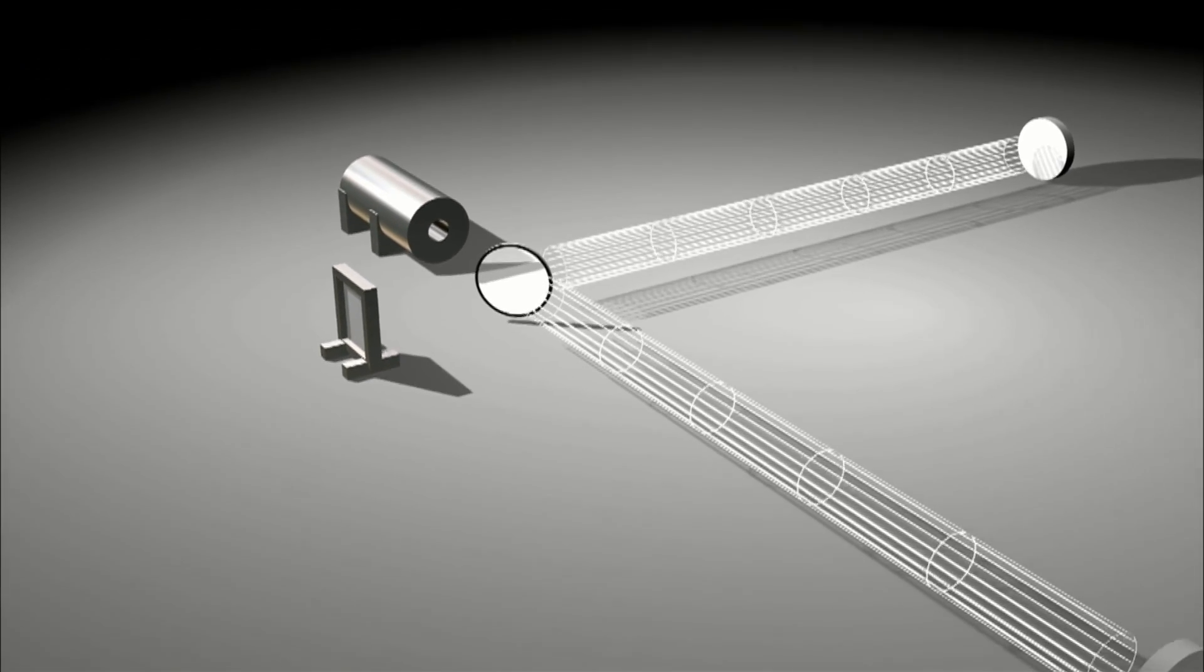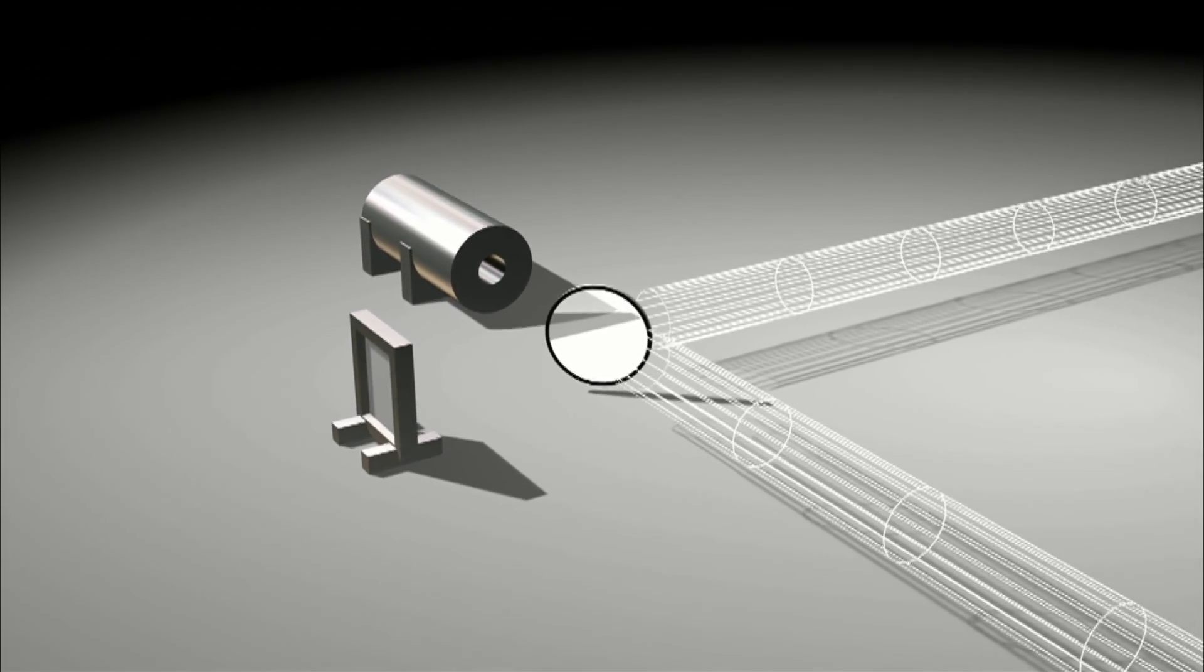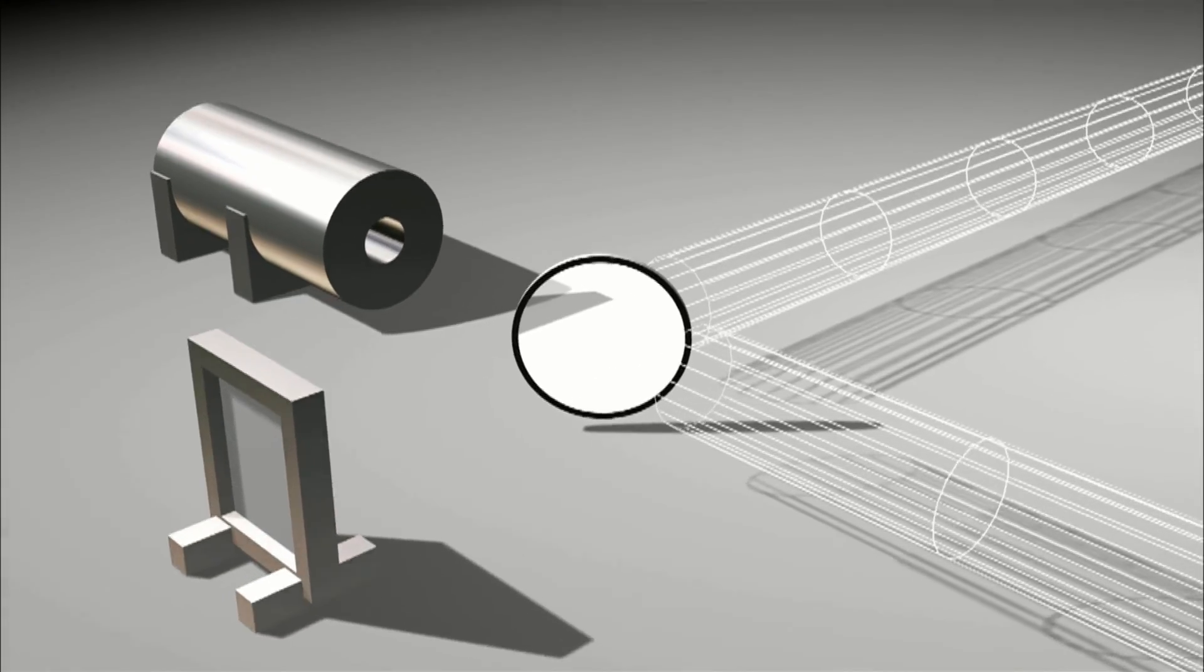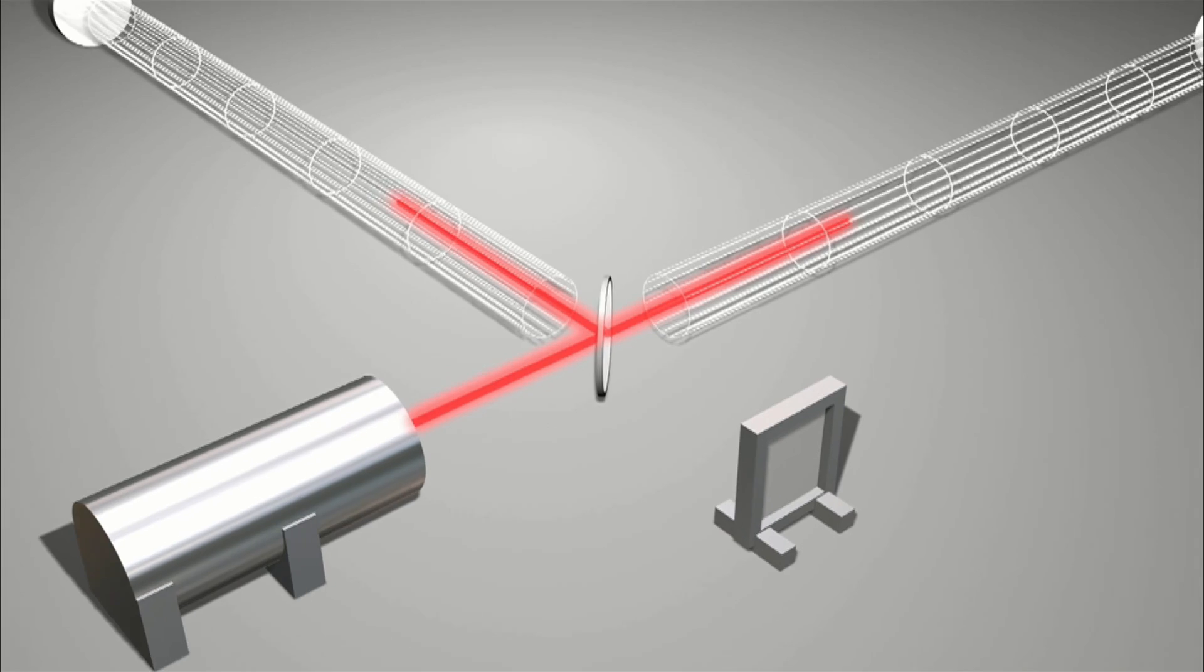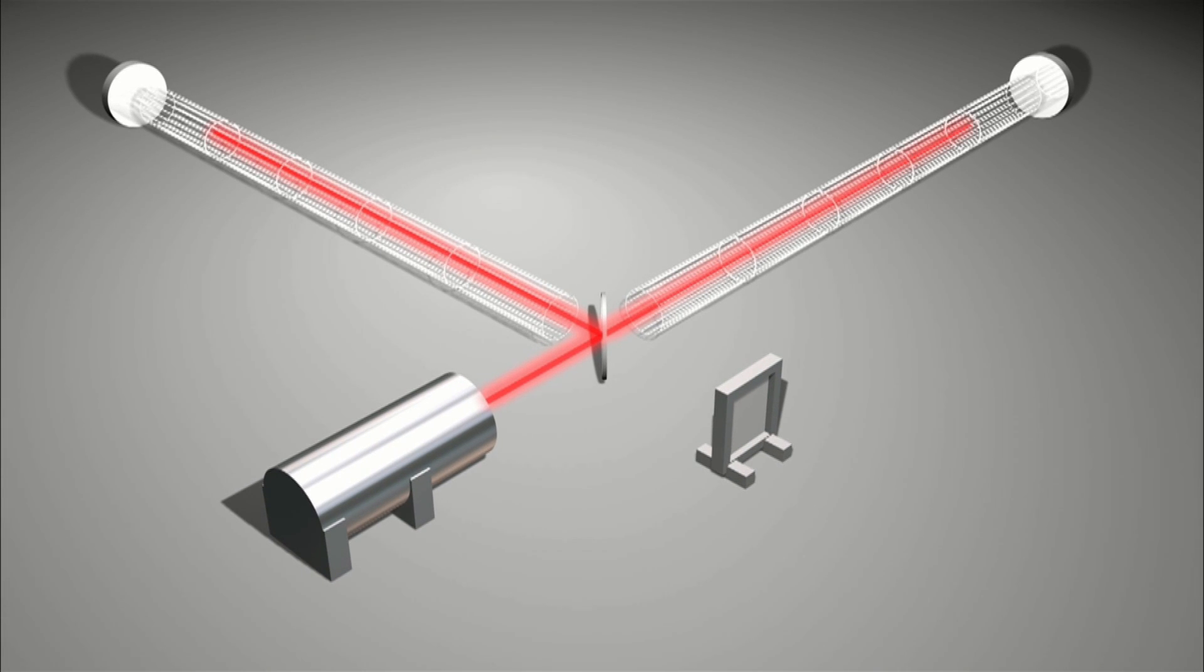To measure this stretching and squeezing, Ray turned to a device called an interferometer. A laser beam is split and sent down a pair of long perpendicular tubes, each precisely the same length.